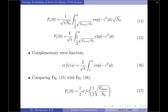This is where we stop simplifying and instead compare with the complementary error function, defined as erfc of u equals 2 divided by square root of pi, times the integral from u to infinity of exponential of minus z squared dz. By careful comparison, noting the factor of 2 difference, Pe of 0 reduces to 1 by 2 times erfc of 1 by 2 times root of E max by N0. This is the final expression for the probability of error of the first kind.